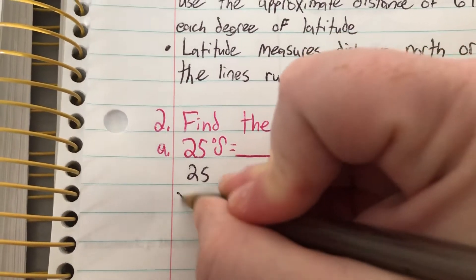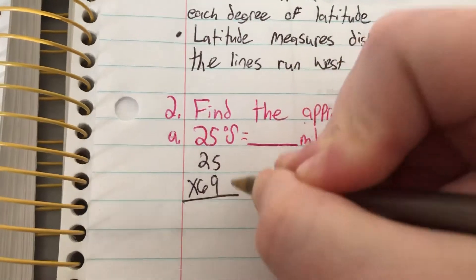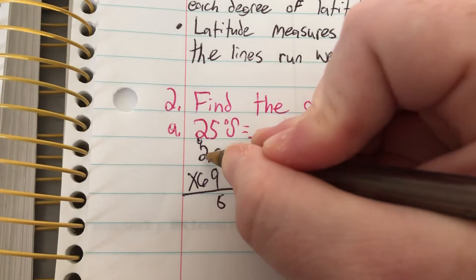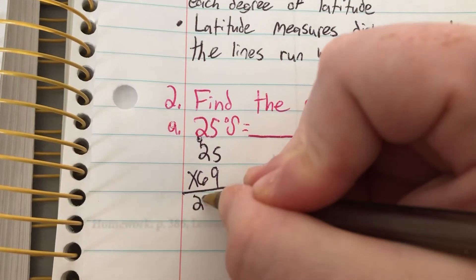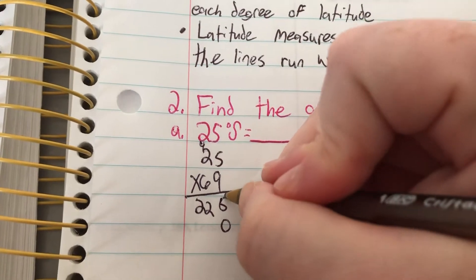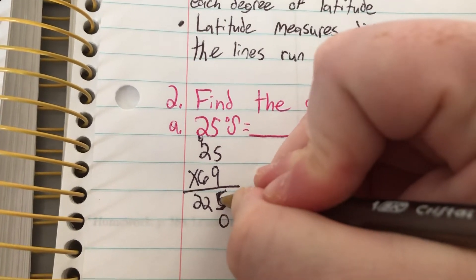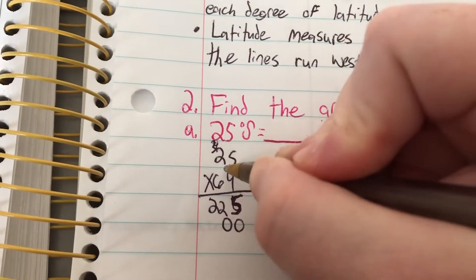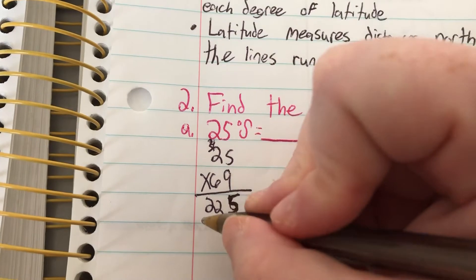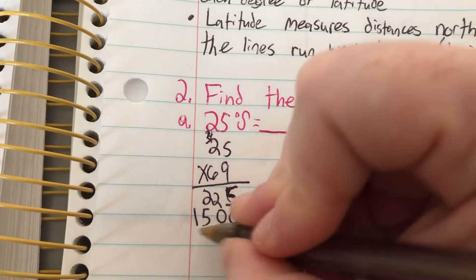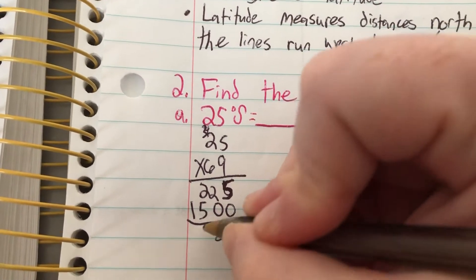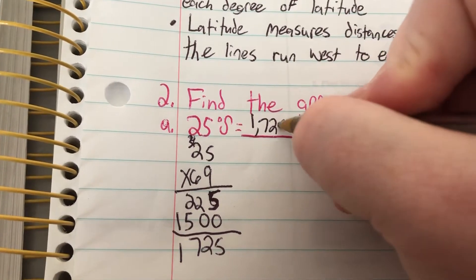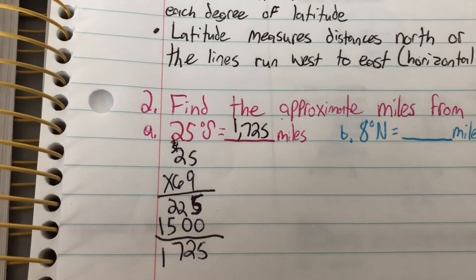So 25 times 69, 9 times 5 is 45. 9 times 2 is 18, carry the 4. 6 times 5 is 30. 6 times 2 is 12 plus 3 is 15. Add it up 5, 2, 2, 7, 1.